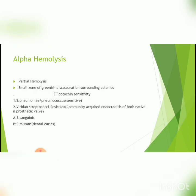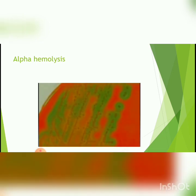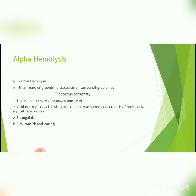Alpha hemolysis is partial hemolysis. You can see a small zone of green discoloration surrounding the colonies, as shown in this diagram. Based on optochin sensitivity, streptococcus pneumoniae, also known as pneumococcus, which undergoes alpha hemolysis, is sensitive to optochin. Whereas viridans streptococci, which commonly cause community-acquired endocarditis of both native and prosthetic valves, are resistant to optochin. Streptococcus sanguinis and streptococcus mutans, which cause dental caries, are part of the viridans streptococci.